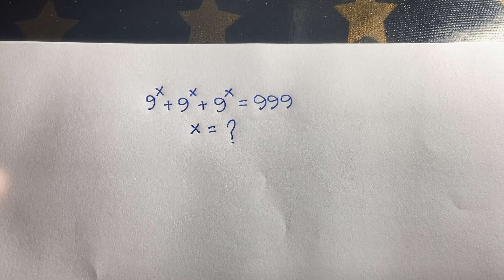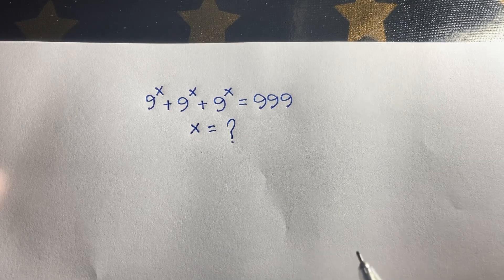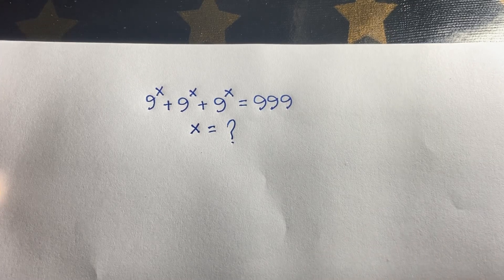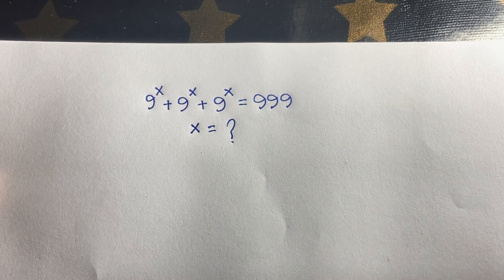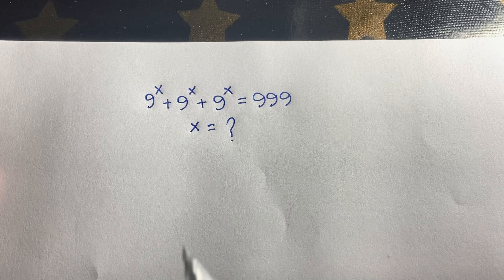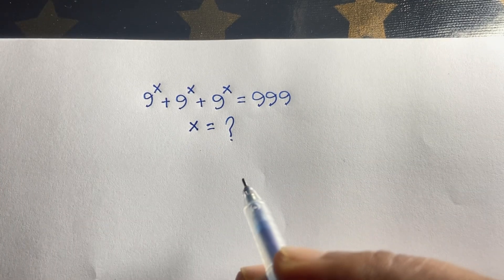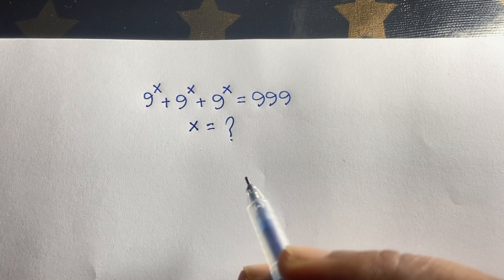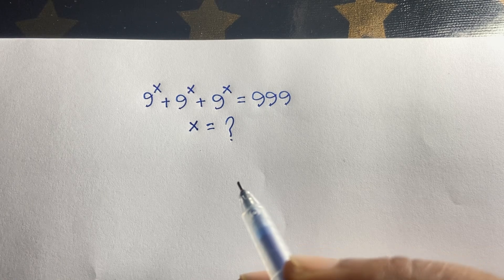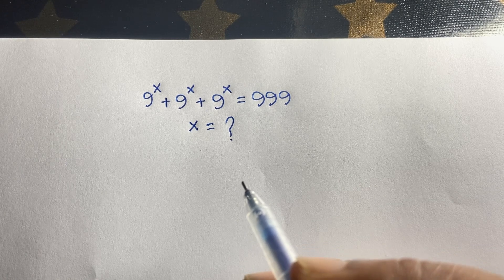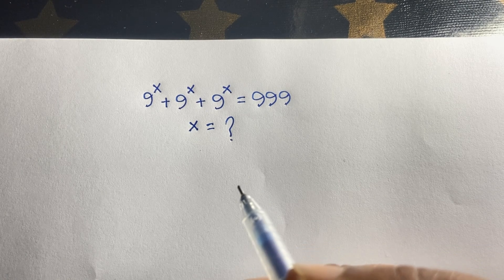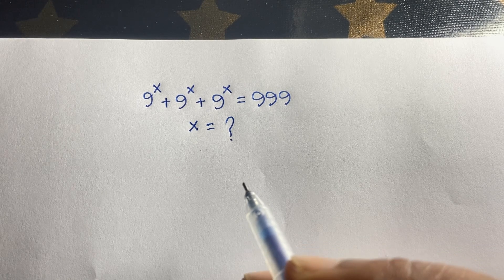Hello everyone. In this video, we will solve this Japanese Math Olympiad question: 9 to the power x plus 9 to the power x plus 9 to the power x is equal to 999. And we will find out what is the value of x in this exponential equation.